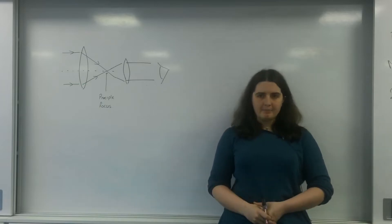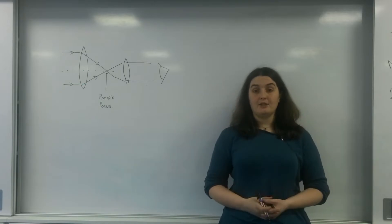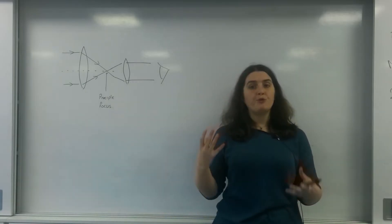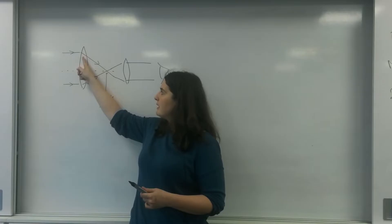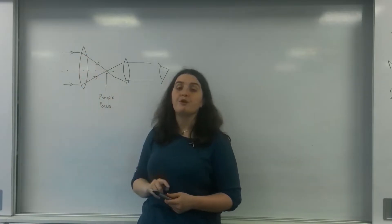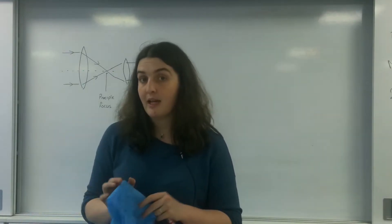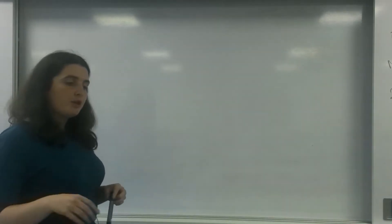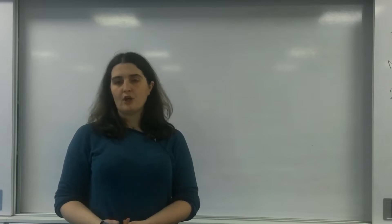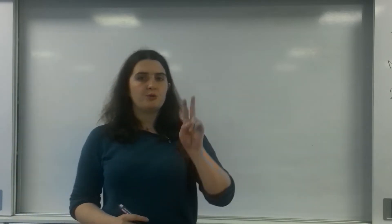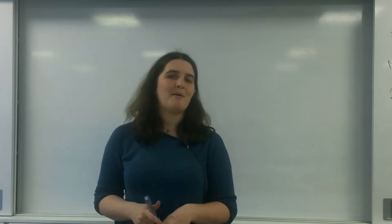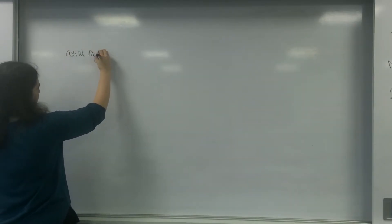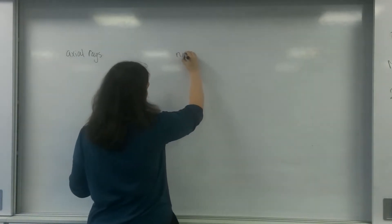What I'm going to talk about today is a refracting telescope in something called the normal adjustment. Every lens has its own focal length, the distance between the middle of the lens to where its principal focus is. Every lens will have one, and this is important. I'm going to draw two diagrams: this is with axial rays and this here is with non-axial rays.